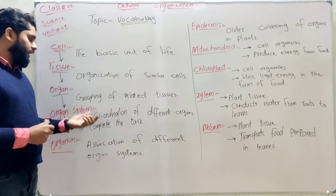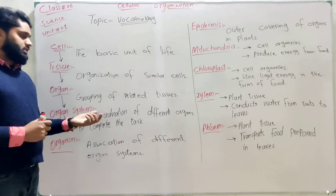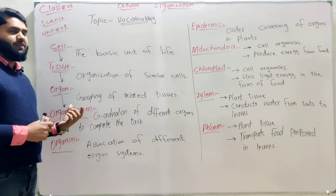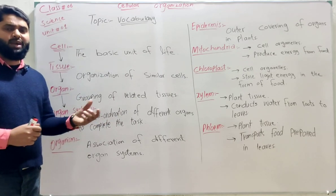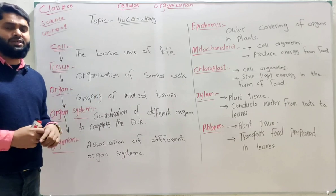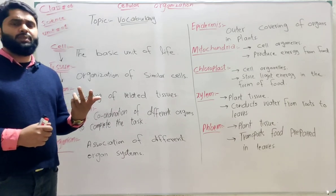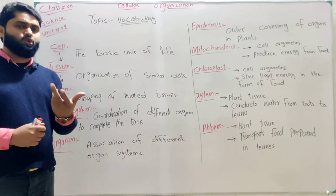Due to this, the coordination of different organs to complete a task is known as an organ system. Animals have different organ systems, and plants also have different organ systems, like the root system and shoot system.